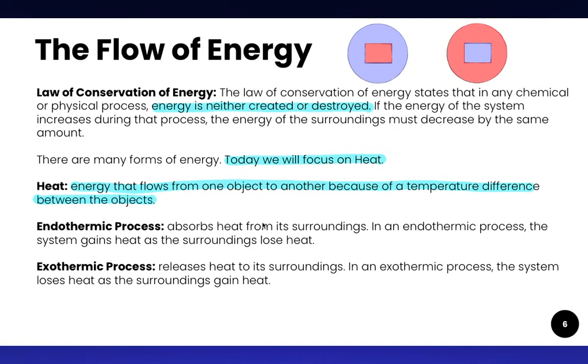Now there are two types of heat energy flowing and they're called endothermic processes and exothermic processes. Let's start by talking about an endothermic process. In an endothermic process the system absorbs heat from its surroundings. In an endothermic process the system gains heat as the surroundings lose heat.